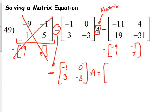When we subtract this matrix, negative 11 minus negative 9, subtracting a negative, same as adding positive. So, negative 11 plus 9 is negative 2. 4 minus negative 1, 4 plus 1, so that's 5. 19 minus 1 is 18. Negative 31 minus 5 is negative 36.